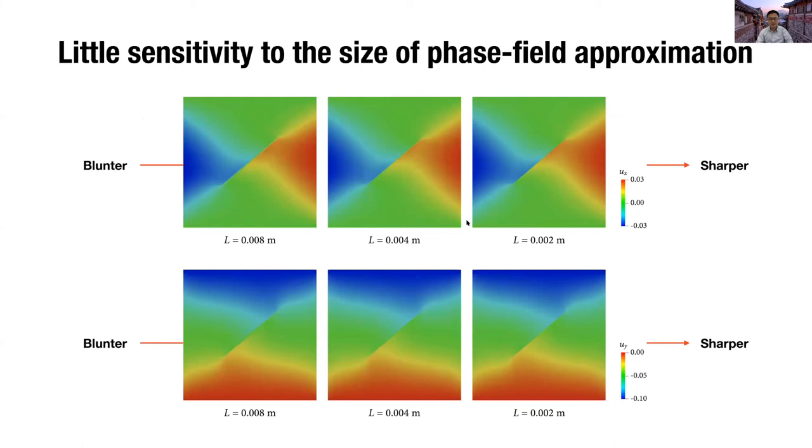We have tested this example with different length parameter values, as I've shown earlier. Then you can see that the results converge as the length parameter becomes smaller. But you can see that the rather blunt approximation also works quite well.